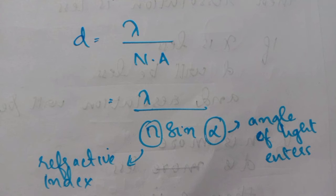This is the equation d equals lambda divided by NA, where NA is numerical aperture. The lesser value will always result in higher resolution.